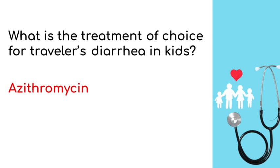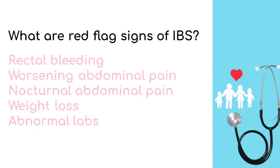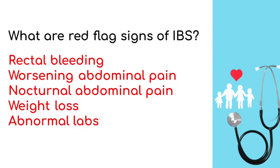What are some red flag signs of irritable bowel syndrome? Rectal bleeding, worsening abdominal pain, nocturnal abdominal pain, weight loss, and abnormal lab results.